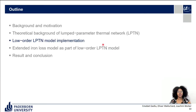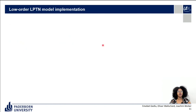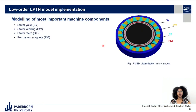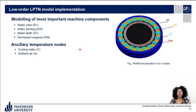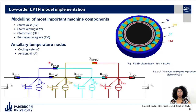Next, we will see the low-order LPTN model implementation, which is feasible for real-time temperature estimation. For this purpose, the machine is divided into fewer thermal components — in our case: stator yoke, stator winding, stator tooth, and PM — depending on the location of thermocouples. We also have ancillary temperature nodes: the cooling water temperature and ambient air temperature. These temperature nodes are connected via thermal resistances. The four main nodes are estimated using LPTN, whereas the ancillary temperature nodes are real-time measurements used as inputs in the estimation process.